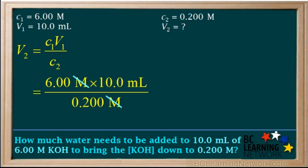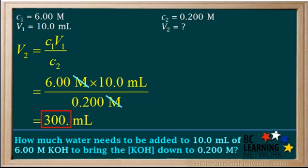We cancel out the unit molarity. So the unit we're left with is milliliters, which will be the unit for our answer. So we go 6 times 10 divided by 0.2, which gives us 300. Because we have only three significant figures, we put a decimal point after the 300, but we don't add another zero. So the final volume of our diluted solution, V2, is 300 milliliters.